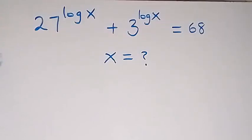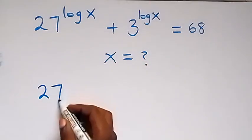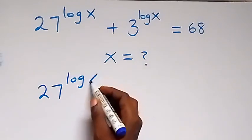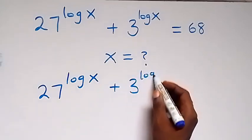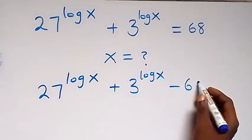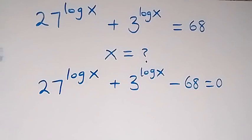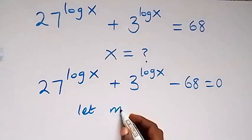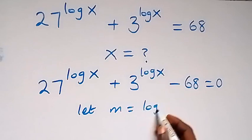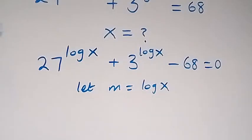Hello, you are welcome. How to solve this nice exponential equation involving log. Reading from here, you can take 68 to this side, and this becomes 27 raised to power log x plus 3 raised to power log x minus 68 equals 0. Now from here we have log x, so let the letter m be equal to log x. Then this becomes 27 raised to power m.